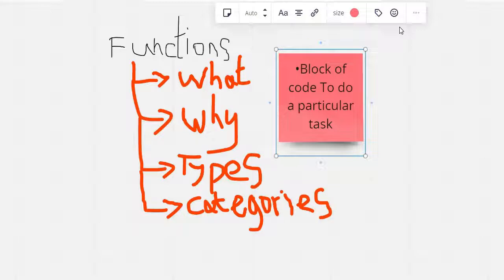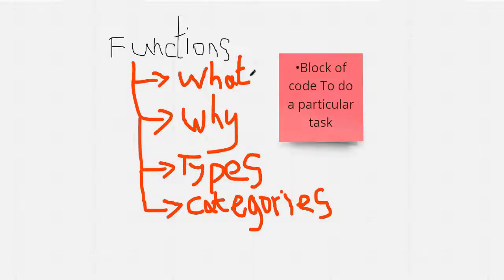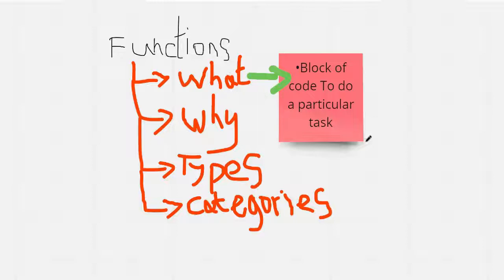For the first question — what is a function? A function is a block of code in order to do a particular task. A block of code to do the particular task is called a function.